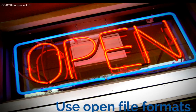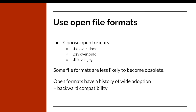The next step is to use open file formats for your data and other research outputs. Choose open file formats rather than file formats from proprietary software. This means using .txt over .docx, and .csv over .xlsx. I recommend this because some file formats are less likely to become obsolete. Open file formats have a history of wide adoption and backward compatibility. Saving your data spreadsheet as an .xlsx Microsoft Excel file may not mean you can open it in a few years. Additionally, when working with images, TIFF is a better file format than JPEG for long-term storage.